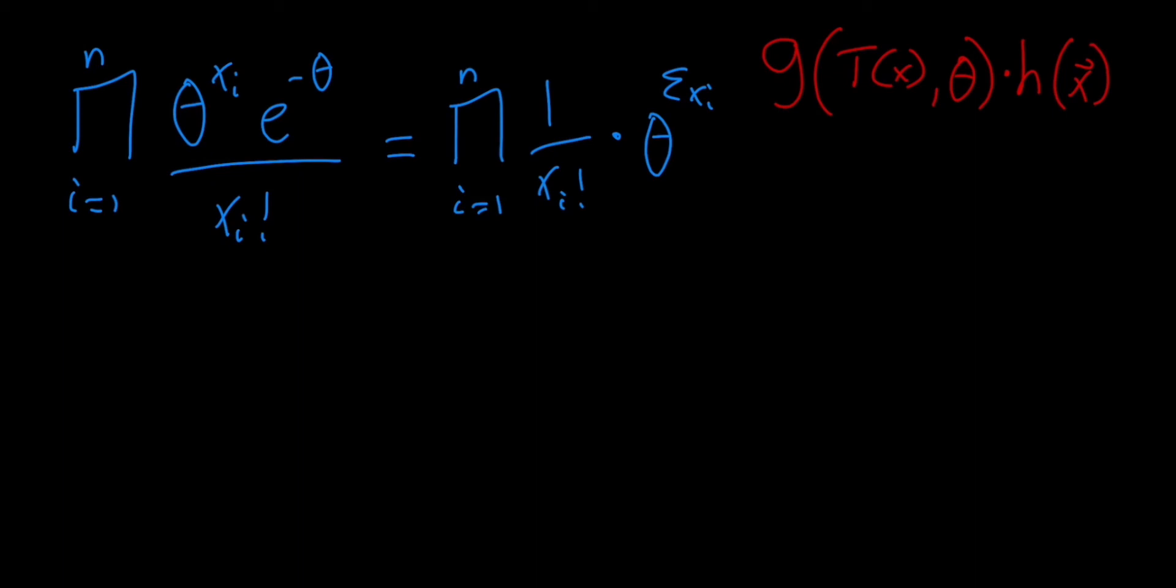And then because this part here doesn't depend on i, that just becomes e to the minus n times theta, because we're multiplying one of those together.